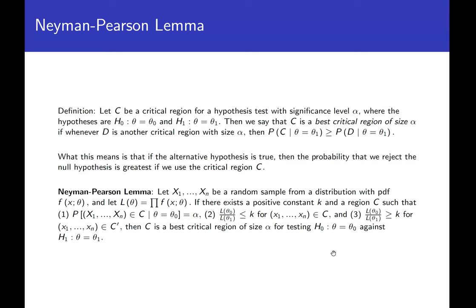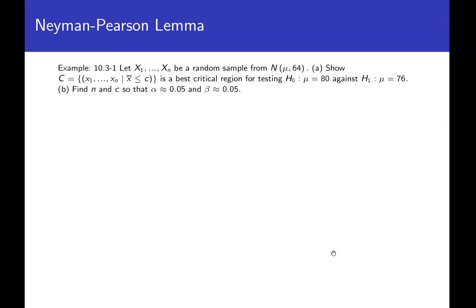They do the proof in the book; we're not going to go through it. Let's look at the first example problem. Take a random sample from a normal distribution with known variance and unknown mean. We want to show that a best critical region is defined by the sample mean less than or equal to some specific number, testing mu equals 80 against mu equals 76, and we'll find N and C so that alpha equals 0.05 and beta equals 0.05.